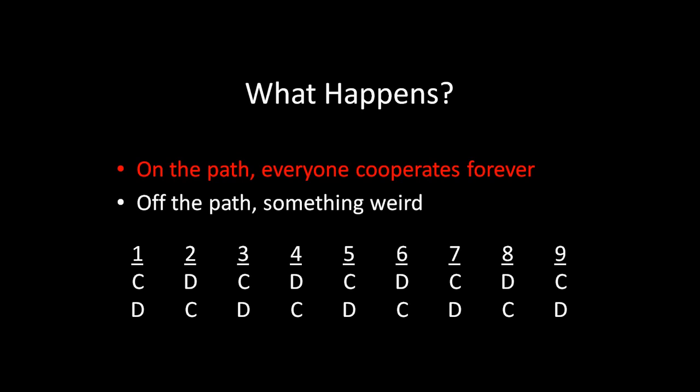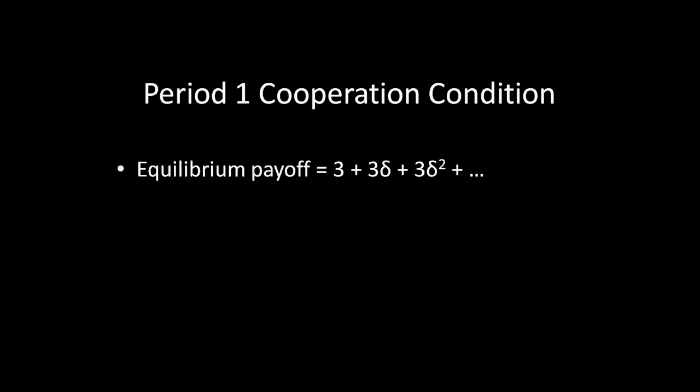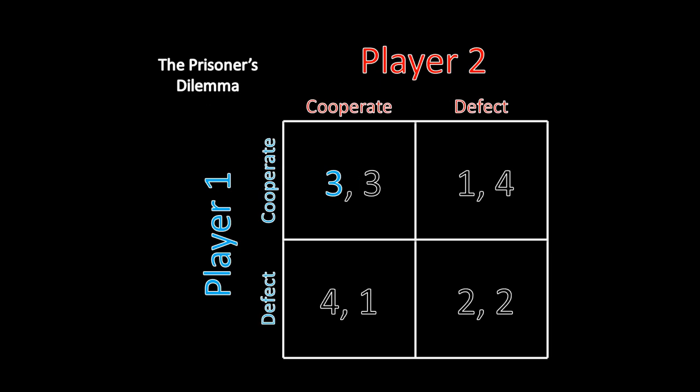Alright, well, on the path, what do we do? If I'm not deviating my payoff for cooperating forever, we know what that is. So in this hypothetical equilibrium payoff, I will receive a payoff of 3 in the first period, 3 in the next period, 3 in the period after that, and so forth. And if you discount appropriately, you get the payoff on your screen right there. That's because, again, if we're cooperating forever, which is what would happen if neither one of us were to deviate from the tit-for-tat strategy, I get this cooperate-cooperate outcome in every period, which awards me a payoff of 3.